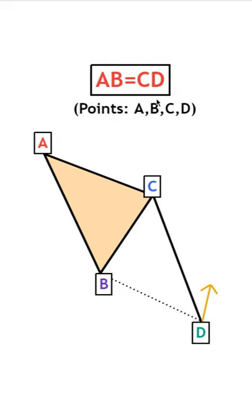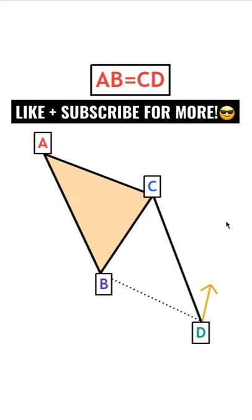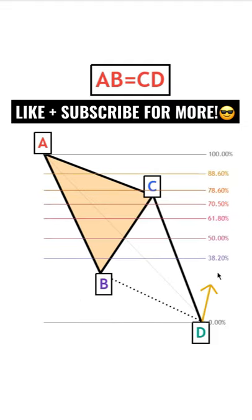The ABCD pattern is now complete and for the take profit, some people like to draw a Fibonacci retracement from point A to D where they look for the 38.2 or the 61.8 level.